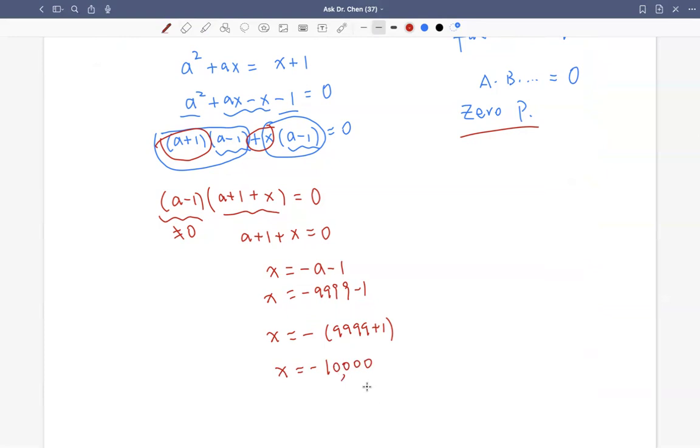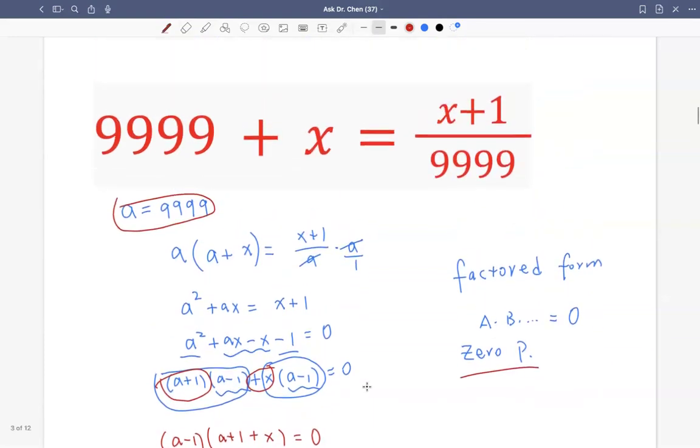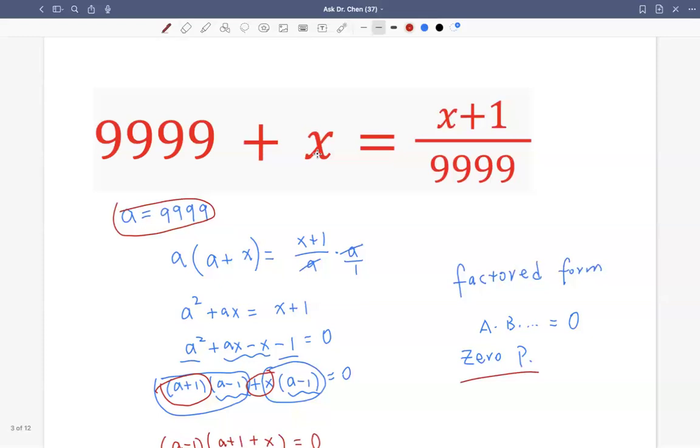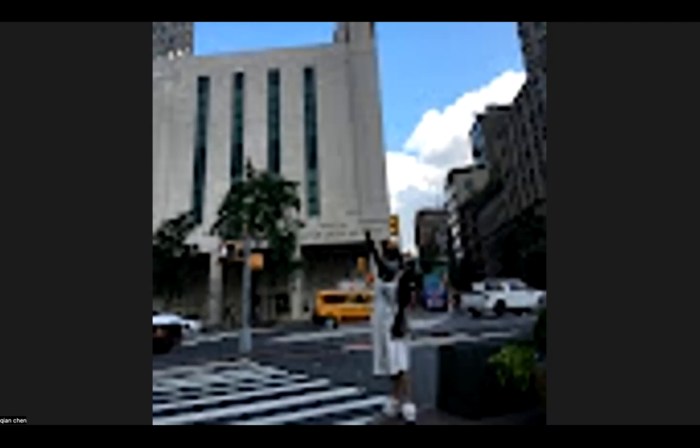Okay, that's it. So the answer is x is negative 10,000. So we can substitute this into 10,000 plus this, we get negative 1. And here, negative 10,000 plus 1, negative 9,999 divided by positive 9,999 also equals negative 1. So that's this question, a cute question.